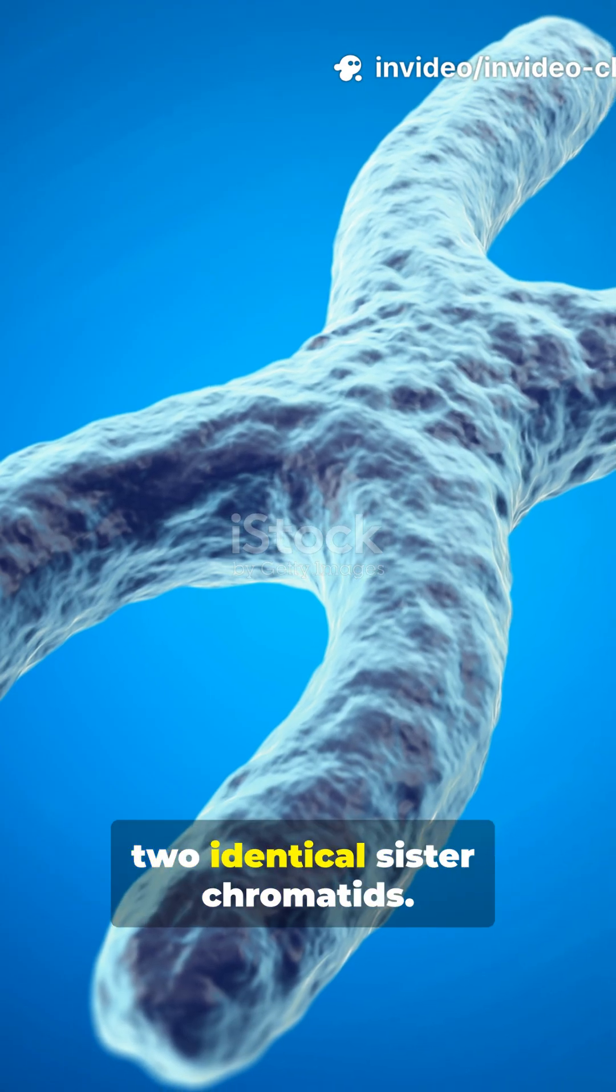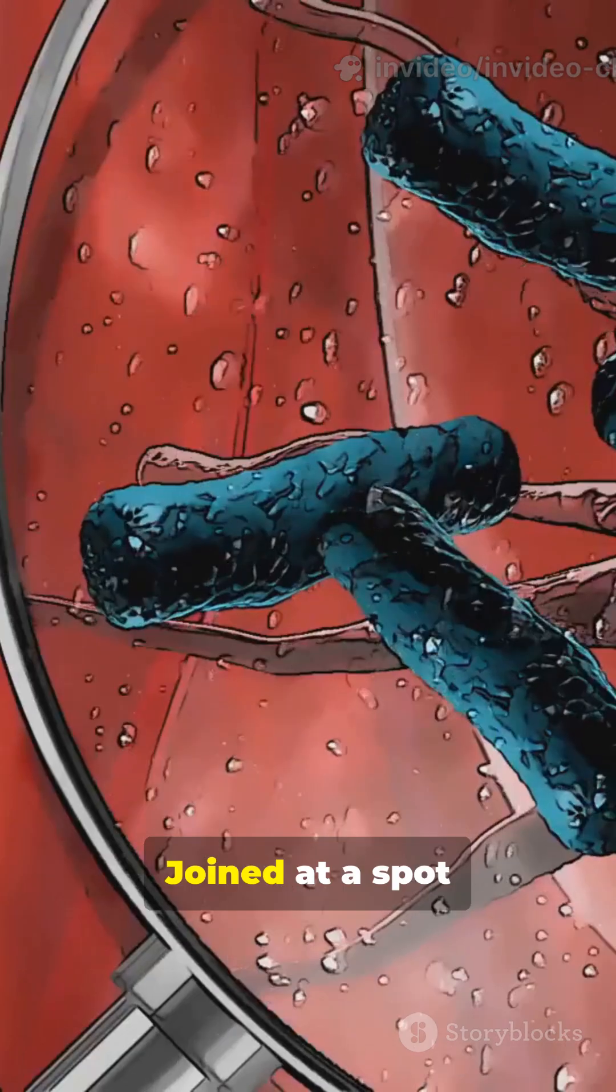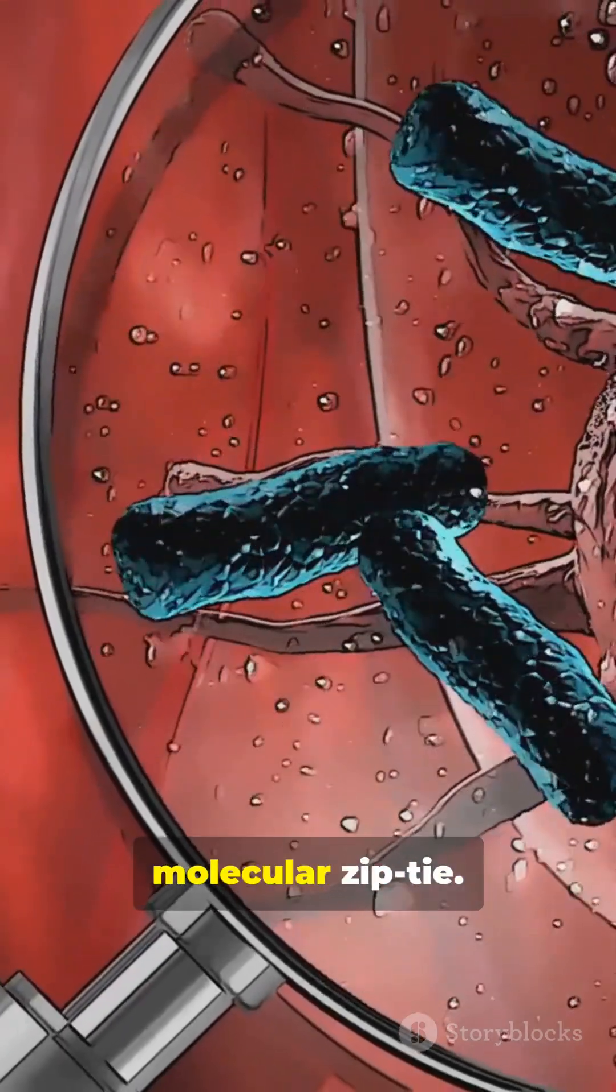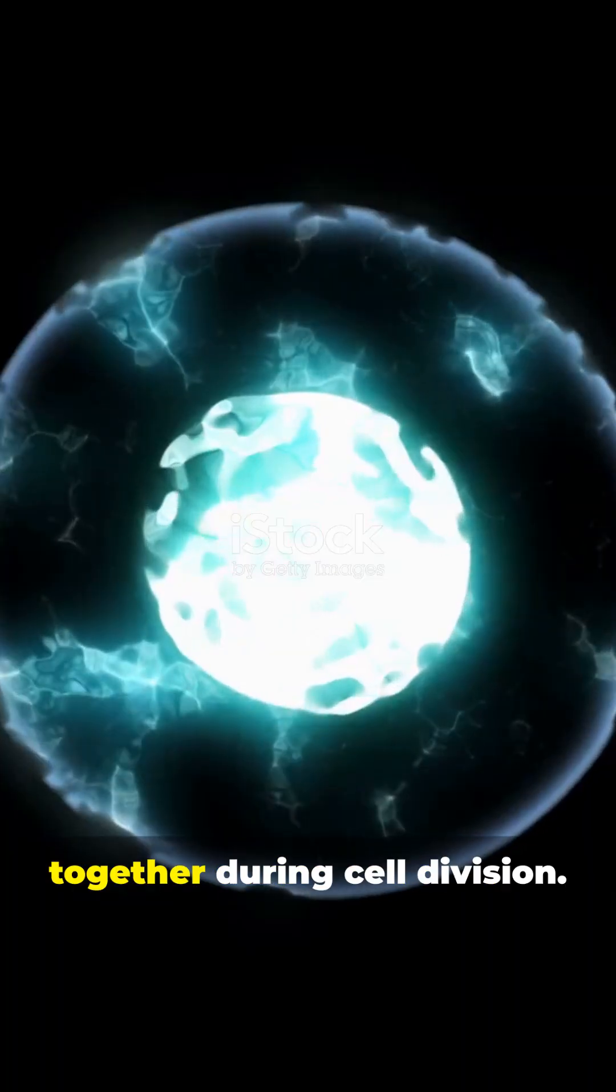Each chromosome has two identical sister chromatids, joined at a spot called the centromere, like a molecular zip tie, keeping things together during cell division.